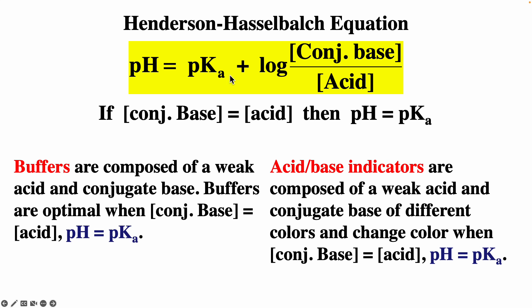In the Henderson-Hasselbalch equation, we have pH equals pKa plus log of base over acid. Notice that these concentrations are the initial concentrations. You could also use moles of base over moles of acid. If the concentration of the conjugate base equals the concentration of the acid, then this fraction equals 1, log of 1 is 0, and the pH is equal to pKa.